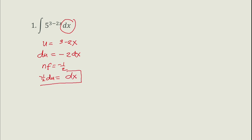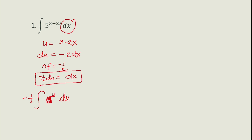So we have negative one half times the integral of 5^u du. Using the formula, the integral of a^u du equals a^u over ln(a) plus c, this becomes negative one half times 5^u over ln(5) plus c.